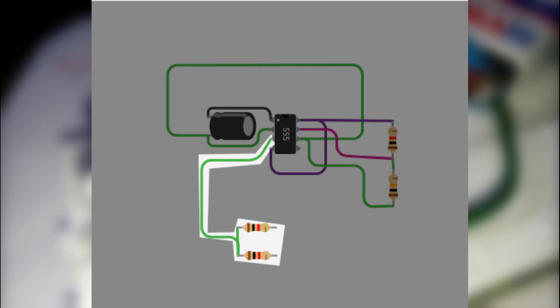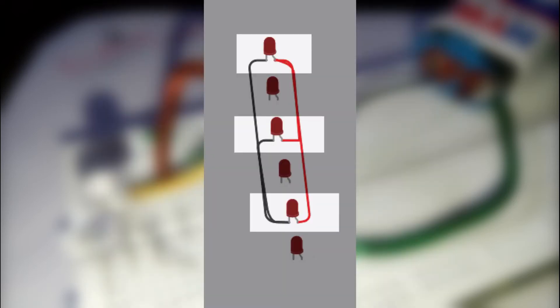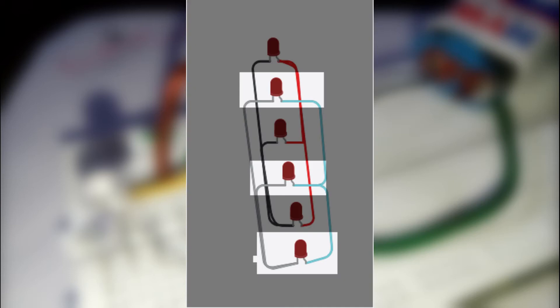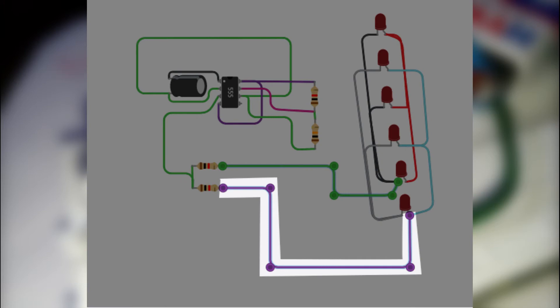Connect the second end of the resistor to pin number 3. Connect the LED circuit as shown in the image. Connect the positive terminal of the first LED block to the other end of the resistor which is connected to pin 3 of the 555 IC.